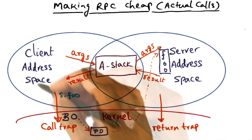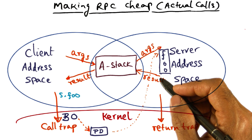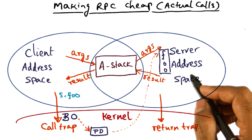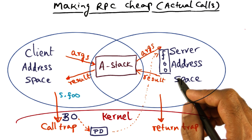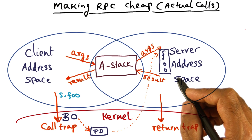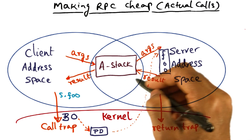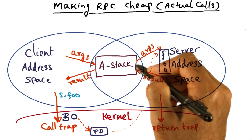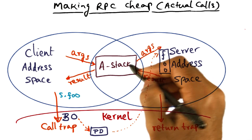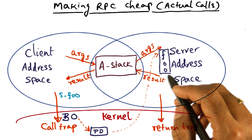To summarize what goes on in the new way we are doing this RPC between the client and the server: during the actual call, copies through the kernel are completely eliminated. This is because all of the argument and result passing between the client and the server is happening through this A-stack, which is mapped into the address space of both the client and the server.